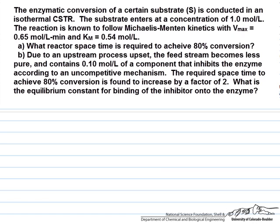Enzyme catalyzed kinetics. I'll let you read the problem statement, but you're given some Michaelis-Menten parameters here, a maximum velocity and a Michaelis constant, and you probably need to use these to solve for the space time in part A that's required to get 80% conversion of the substrate under conditions where it enters at one mole per liter.